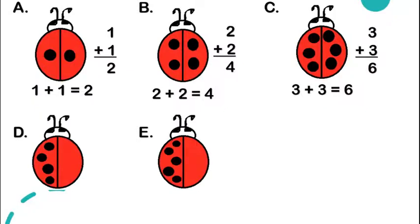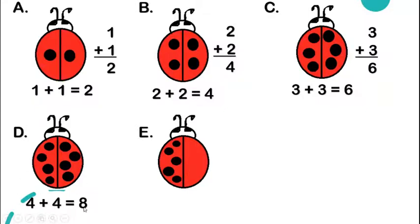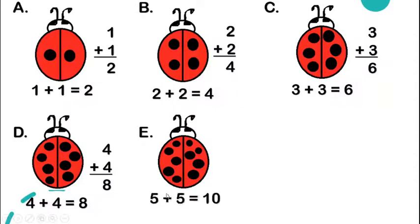In letter D, we have four spots — we draw one, two, three, and four. Four plus four gives us eight when we count all the spots. For the last one, letter E, we have one, two, three, four, five spots, so we need to draw five spots on the other wing as well, giving us the addition sentence five plus five is equal to ten.